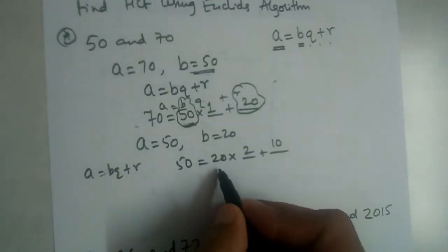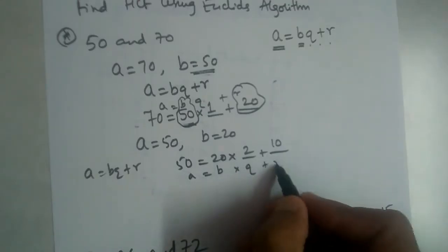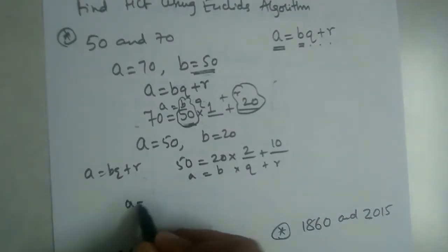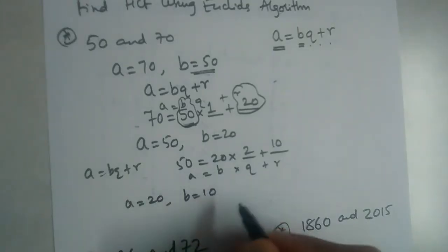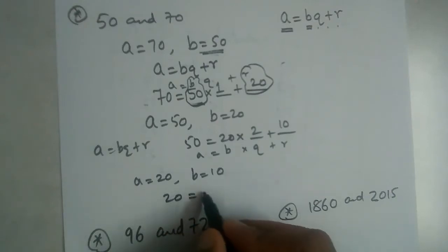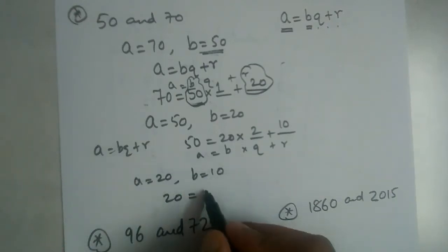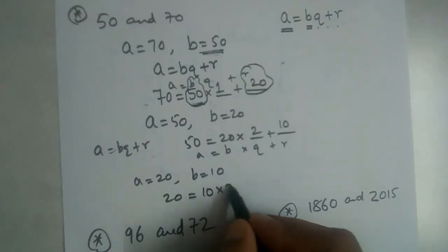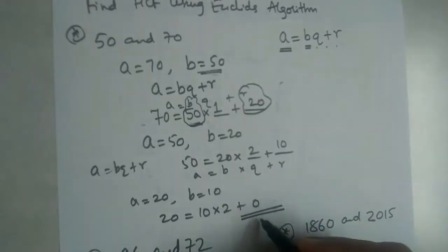Now in the next step, a becomes 20 and b becomes 10. So again: a = bq + r gives us 20 is equal to 10 into 2 plus 0. Ten twos are 20, so the remainder is 0. We continue until we get remainder 0.